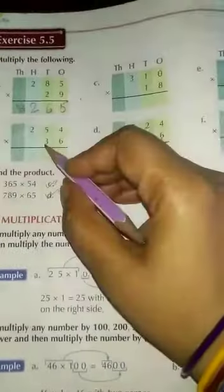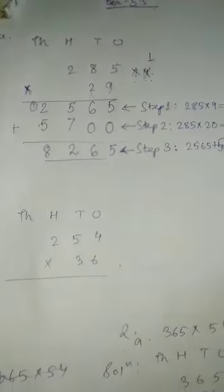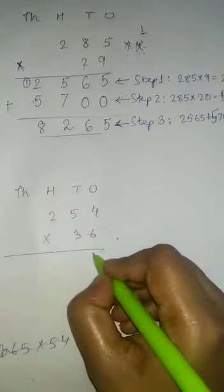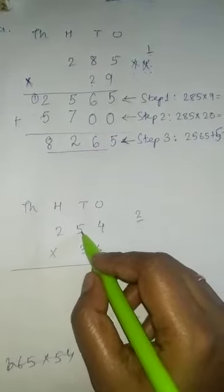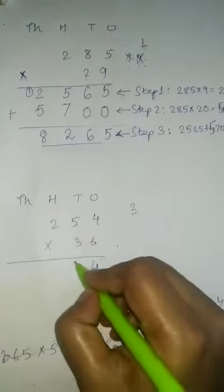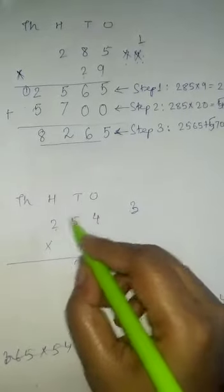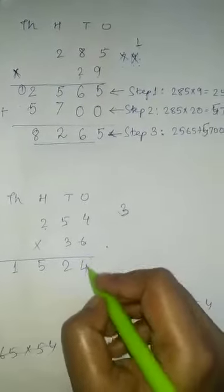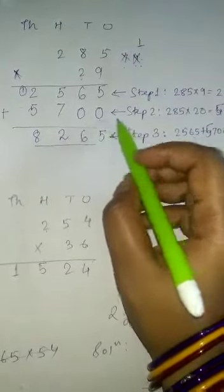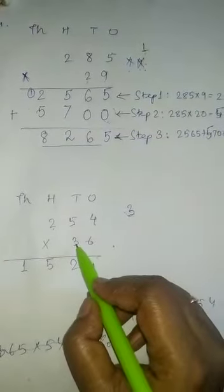Now I will do question number B. Here I have shown you one way. Now we will solve the math in another way. So 6 fours are 24 — 2 is carried over. 6 fives are 30, plus 2 is 32 — 3 is carried over. 6 twos are 12, plus 3 is 15 — 5 in the hundreds place, 1 in the thousands place. Here, instead of writing 0, I will put a cross sign. Now we will multiply 3 with 2, 5, 4.